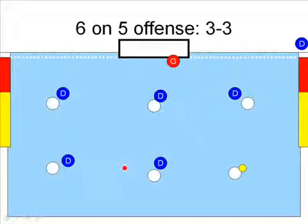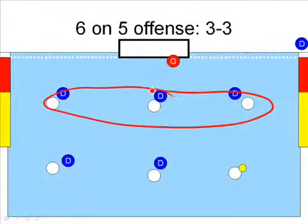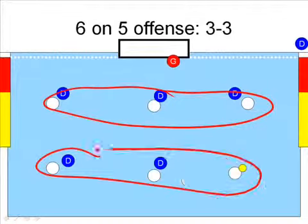Another formation on the 6 on 5 offense is the 3-3. It's called the 3-3 because there are three players on the bottom and three players on the top.